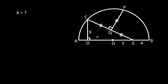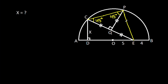We have to find X. If we join CP, then these two angles will be equal and 45 degrees. And if we join PE, then this angle will be 90 degrees, so these two angles will be equal and 45 degrees.